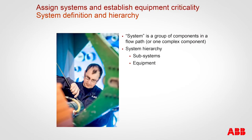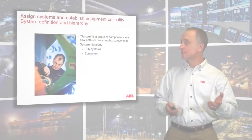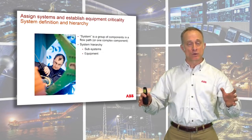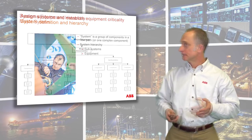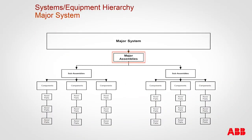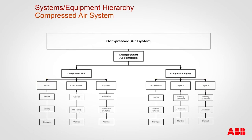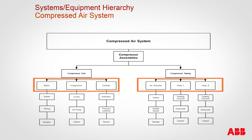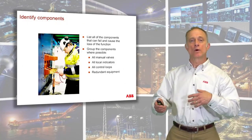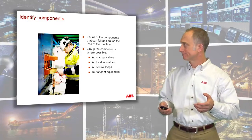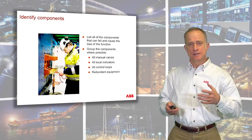Before assigning criticality, we need to establish the systems. A system is a group of components in an equipment category — a piece of equipment and all its subcomponents, or a single complex piece of equipment. For example, a compressed air system would have compressor assemblies and compressor units. Each compressor unit would have a motor, a compressor, and controls — down to a parts level. We want to identify all major components, group them together sensibly.